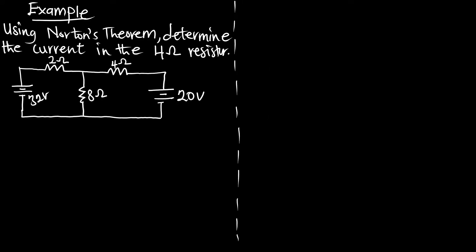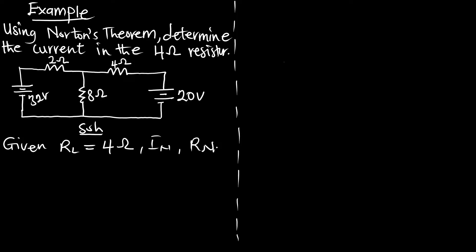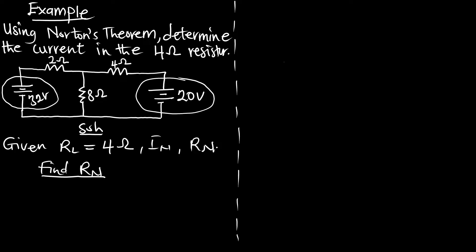Let's solve an example. Using Norton's theorem, determine the current in the 4-ohm resistor. From the question, the load resistance given is 4 ohms. We are now interested in finding IN and RN. I prefer to find RN first. From the diagram, we only have two voltage sources, so I am going to short-circuit them and find the Norton's resistance at the 4-ohm resistor terminals.